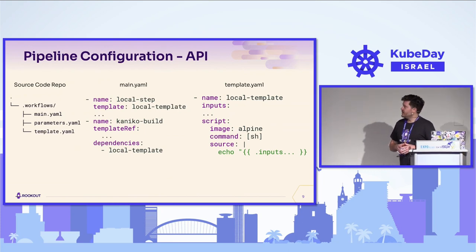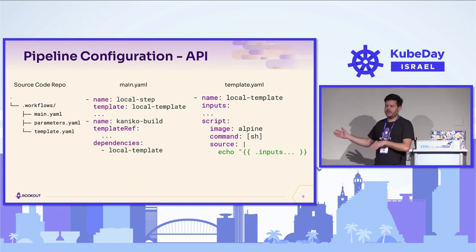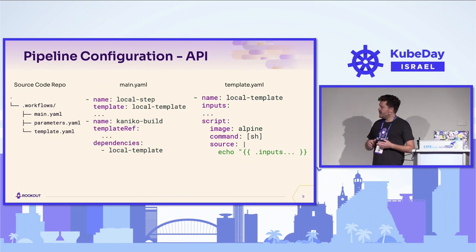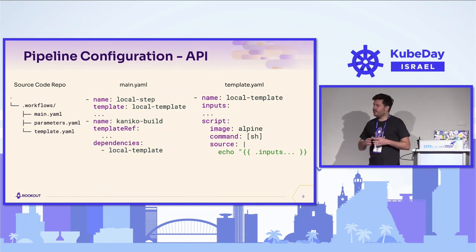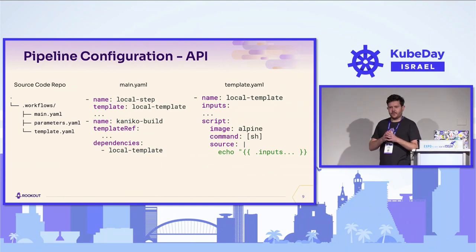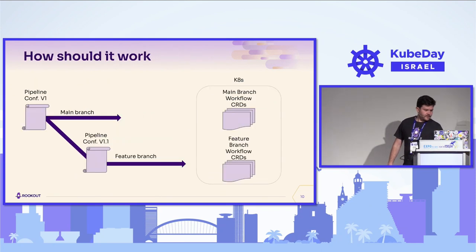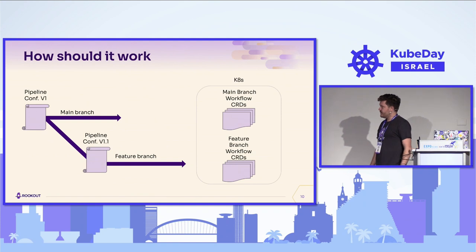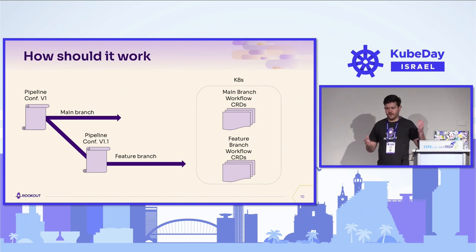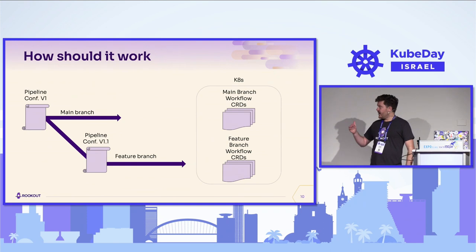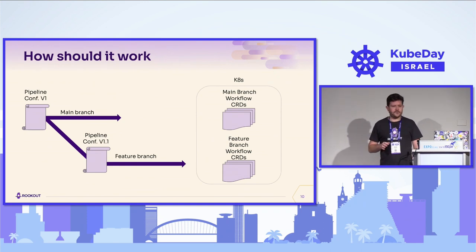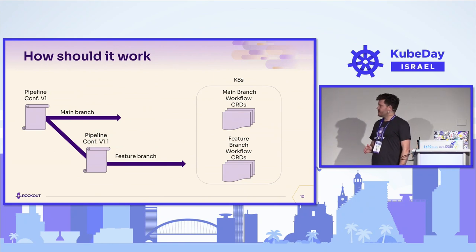As you can see here, on the left side you see the .workflows folder — it's going to be the API of the multi-branch pipeline with Argo Workflows. They're going to have a main YAML file, a parameter file for global values, and a template YAML that holds the templates. This separates the long YAML into different YAMLs and makes it easier to maintain. Each of those branches in the source code repo will have those folders and files, and the end goal was to create a CRD at the Kubernetes cluster where the Argo Workflows controller lives.